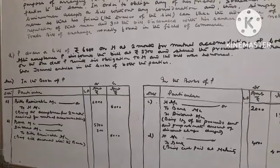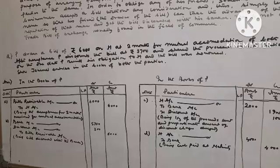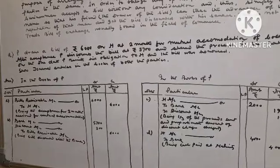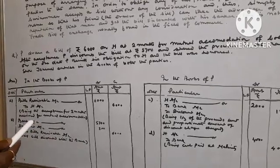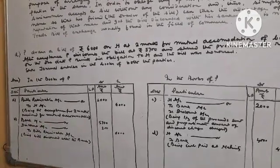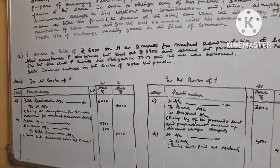In the book of P, the drawer. First entry: Bill Receivable account debit to H, being the acceptance for two months received for mutual accommodation. The Bill value is 6,000.